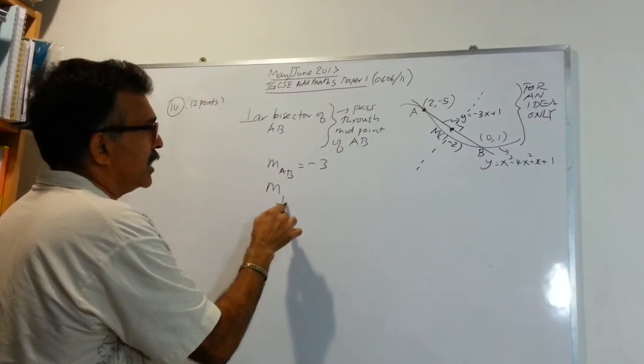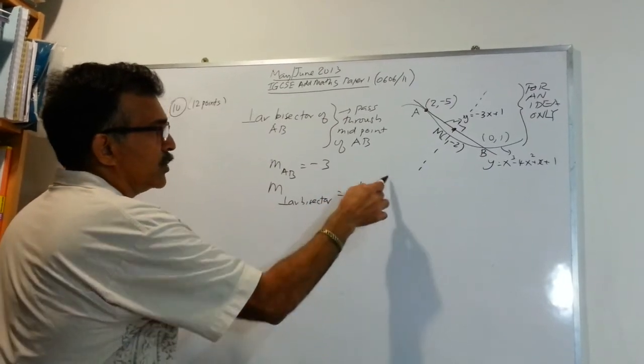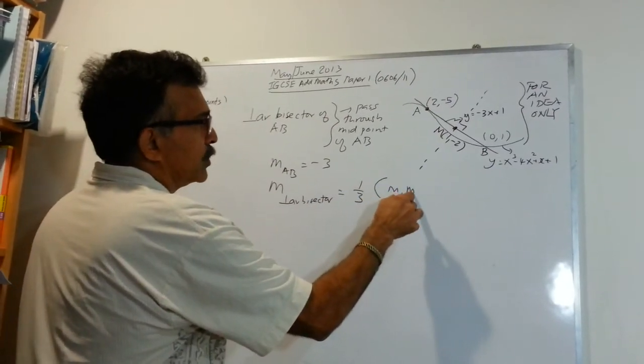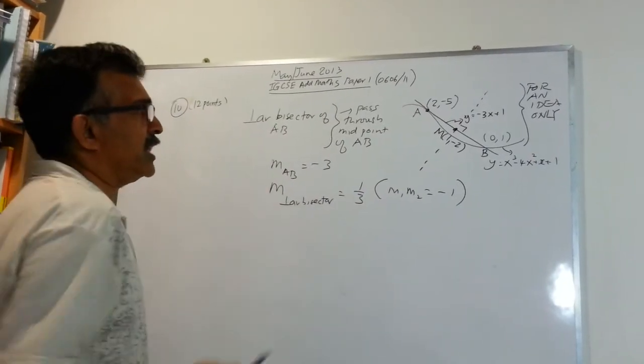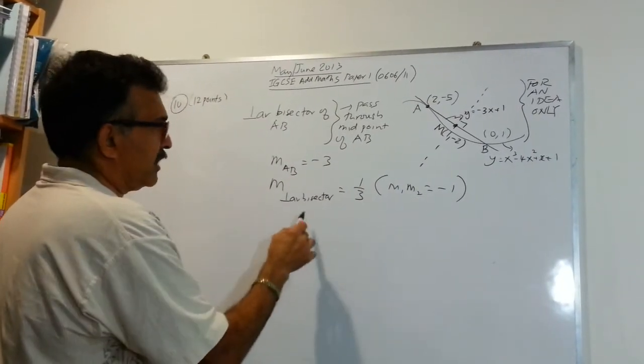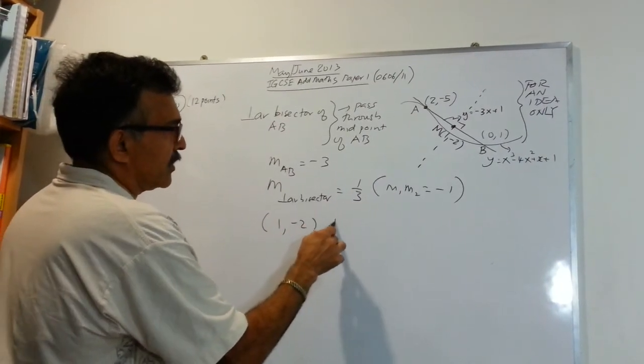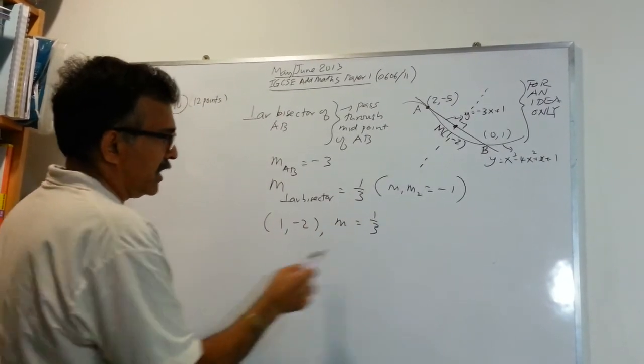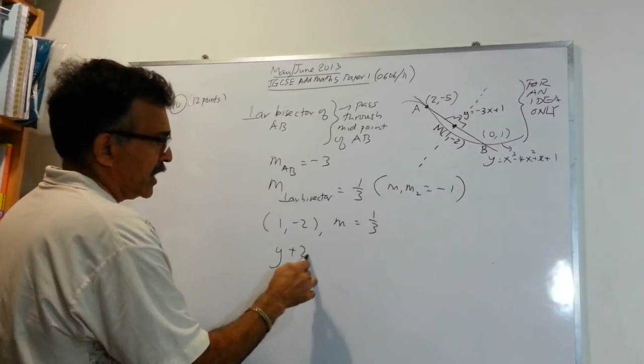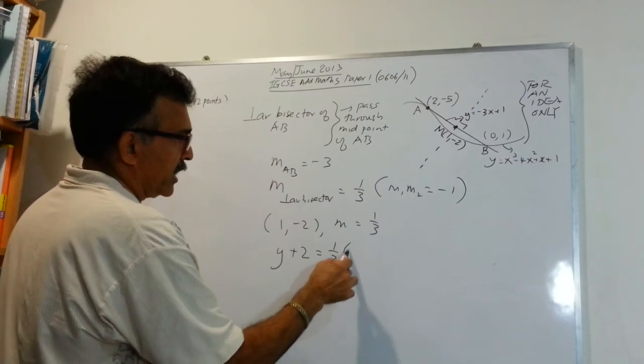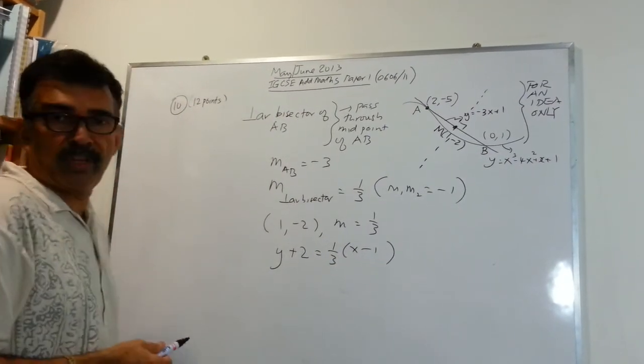the gradient of the perpendicular bisector will be what? 1 over 3 using M1, M2 equals negative 1. Great! Now, we can write the equation. The point is 1 negative 2. The gradient is 1 over 3. Let's write y minus y1 equals Mx minus x1. Use the formula for the equation of a straight line.